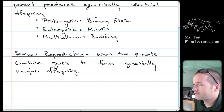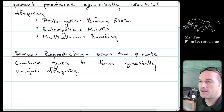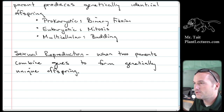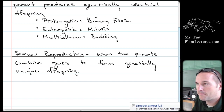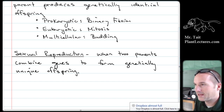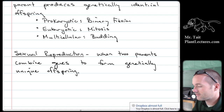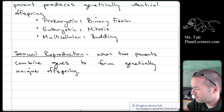Two parents is sometimes not entirely accurate. For example, plants have both male and female gametes, so a plant can self-fertilize and doesn't necessarily need two separate parents.